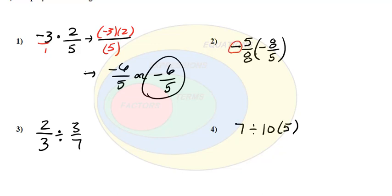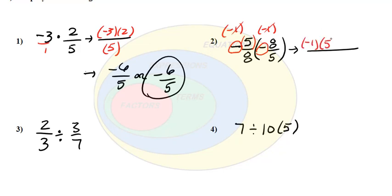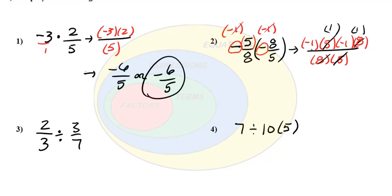Any negative sign in front of a fraction is like a factor of negative 1. So if we look at the factors separately, we have negative 1 times 5 and negative 1 times 8 in the numerators, and 8 and 5 in the denominators. We can cancel fractional factors of 1: 5 over 5 is 1, and 8 over 8 is 1. So the only factors left are negative 1 times negative 1, which gives positive 1.